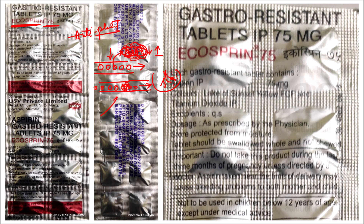Here we have Ecosprin, which is a special gastro-resistant tablet. Our drug is aspirin. This is an anti-platelet drug. Aspirin works by inhibiting the clotting process — it inhibits the platelet clotting mechanism. This was a simple mechanism of action of Ecosprin.